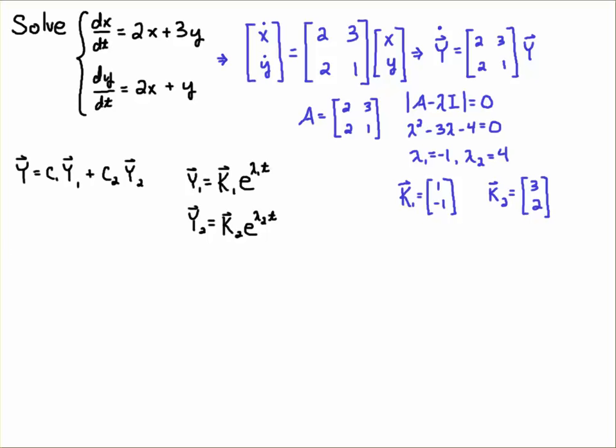So I'm going to write the solution with the numbers that we found. So that means that Y is equal to C1. And then the eigenvector K1, which is 1, minus 1. And then lambda 1 was minus 1. So it's just going to be e to the minus t plus C2. And then K2, which is 3, 2. E to the lambda 2t, which is e to the 4t.